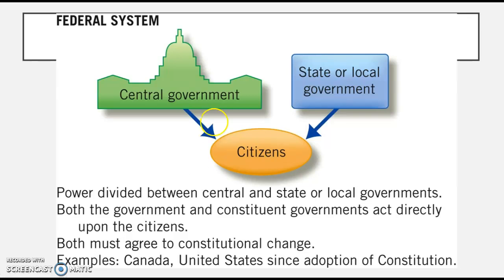It may not be equally shared. For example, in this case it is not equally shared because the national government is going to be supreme over the state government. But it does not mean that the state government doesn't have any power. Some examples of federalist systems include the United States as well as Canada.